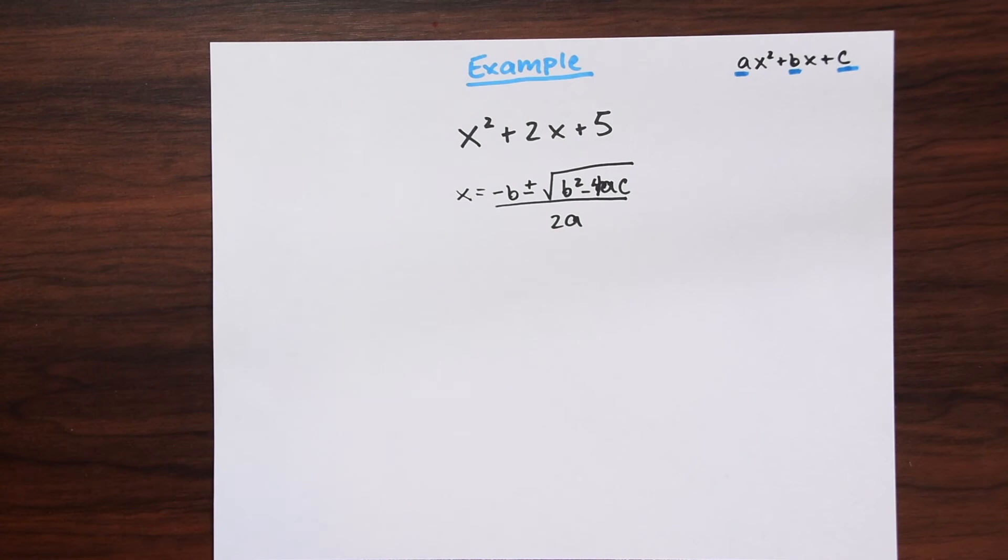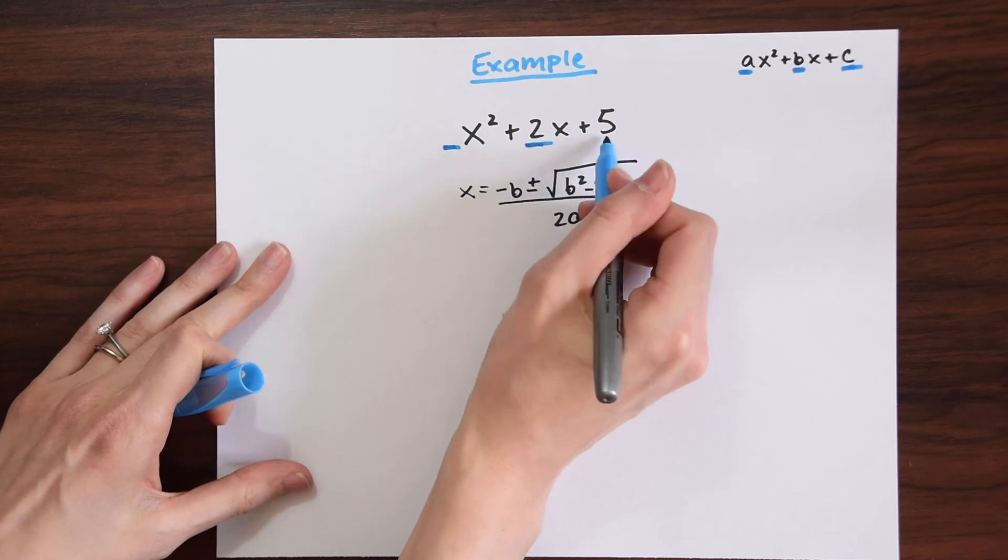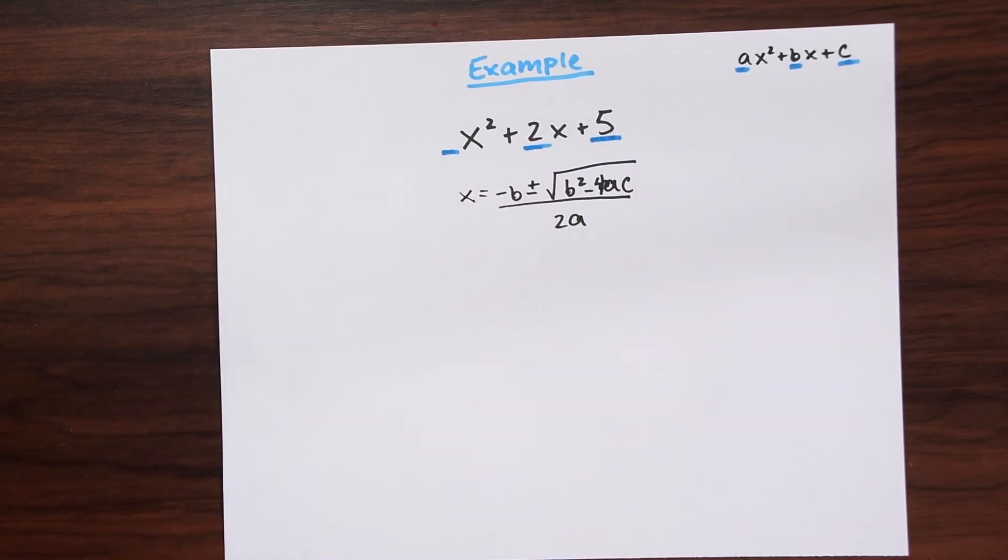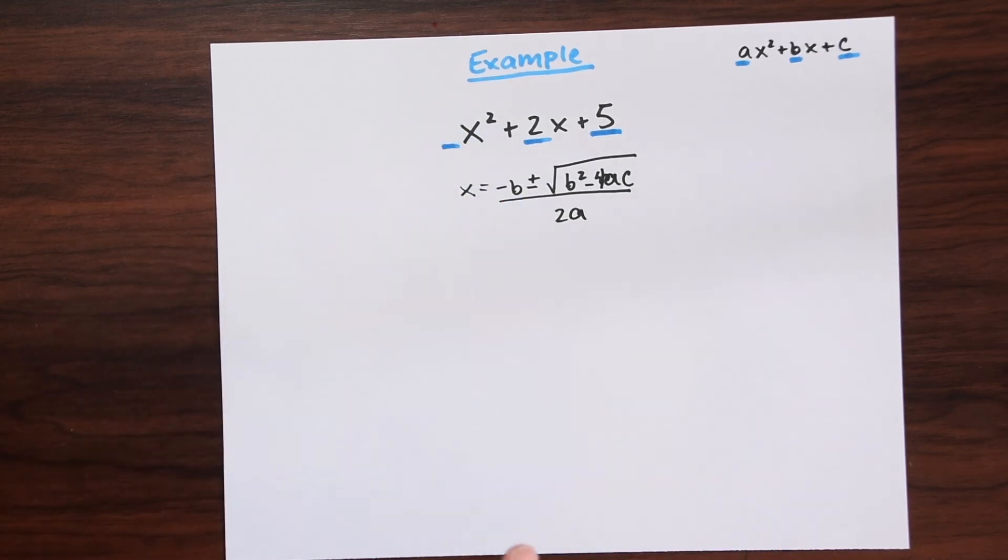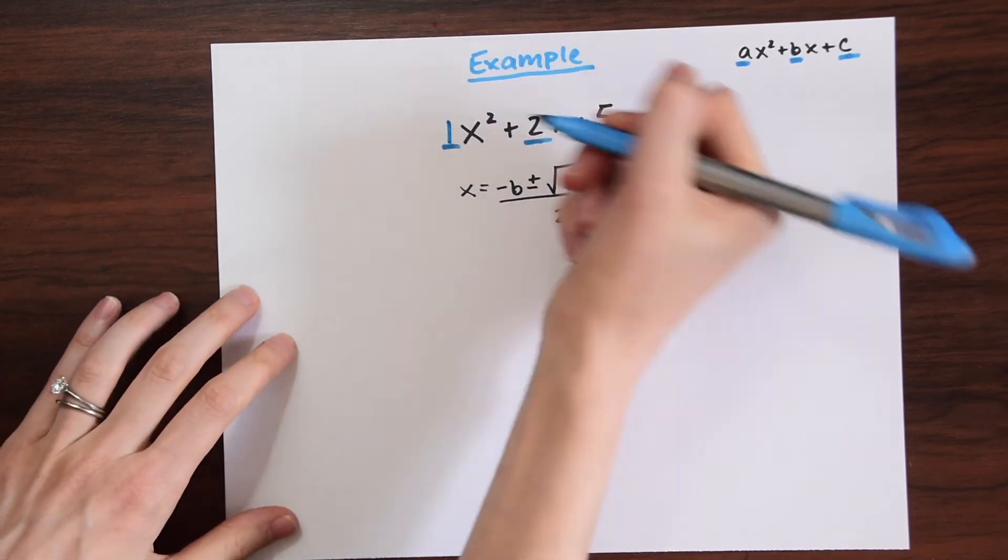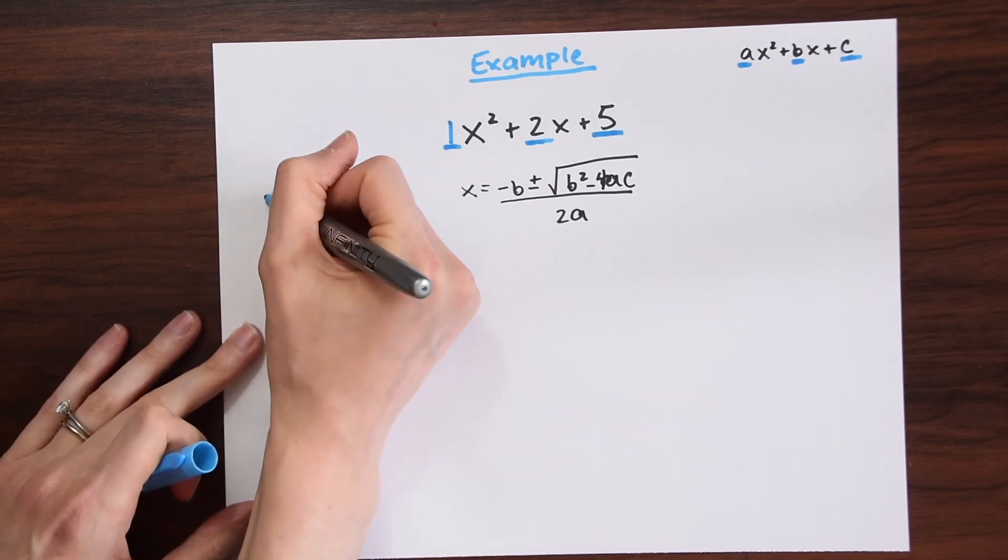The coefficients are the whole numbers that come before each variable or just the whole numbers. If you look for a, b, and c, they'll be underlined in blue. Notice x—there's no number next to x. Whenever there's no number next to x, we always know that the coefficient is actually 1.